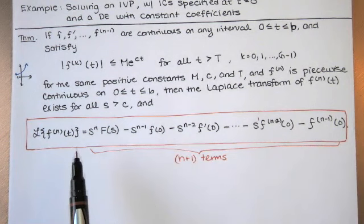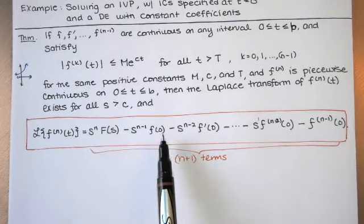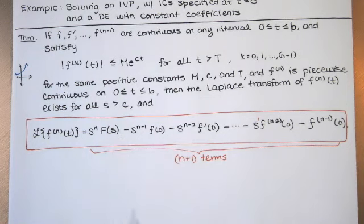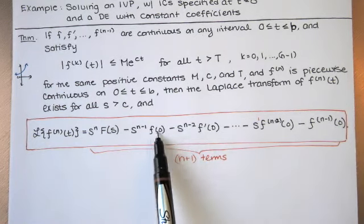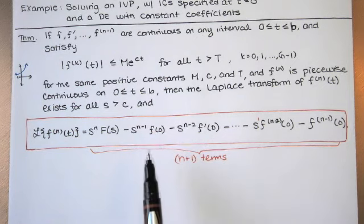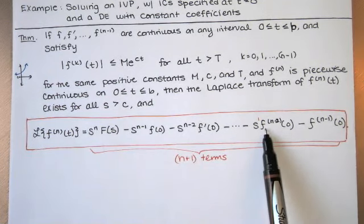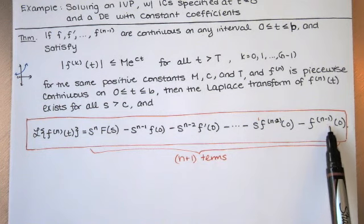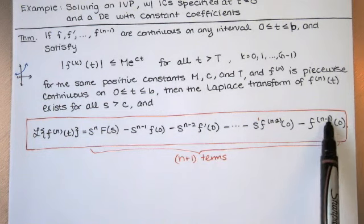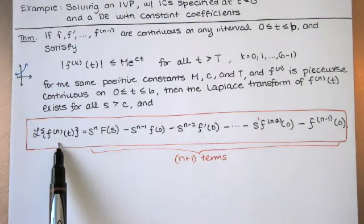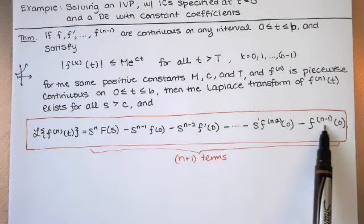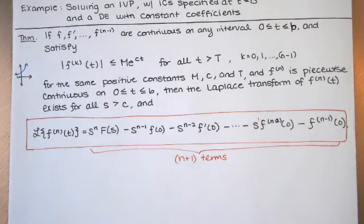Multiplying the other powers of s are the function little f and its derivatives evaluated at zero. As you go from left to right, the orders of those derivatives increase: f of zero, f prime of zero, f double prime of zero, and so on, up to the (n−1)th derivative at zero. So the derivative evaluated at zero is always one less than the order of the corresponding term. For example, if the outer derivative is f triple prime, that term involves f double prime evaluated at zero.